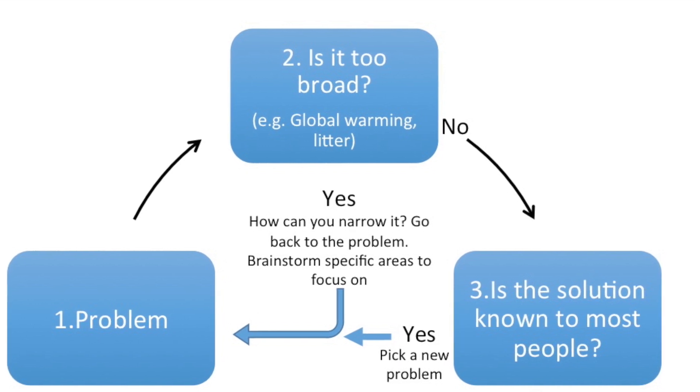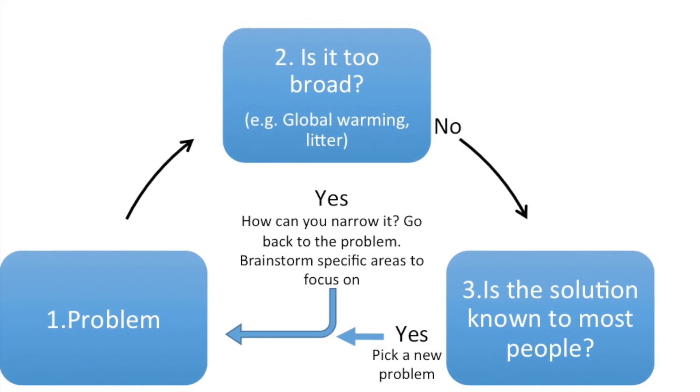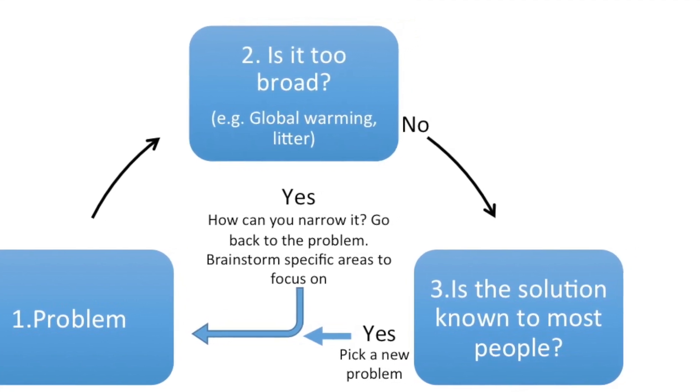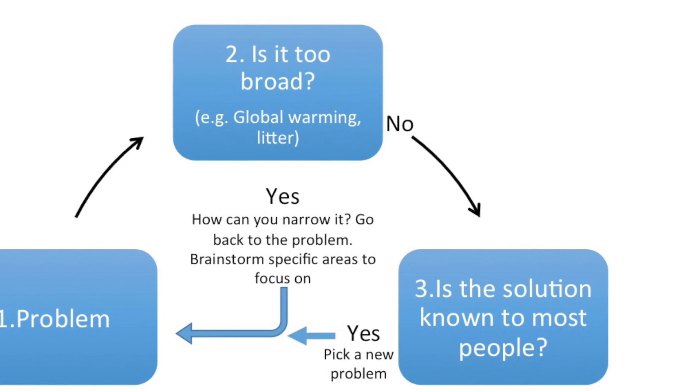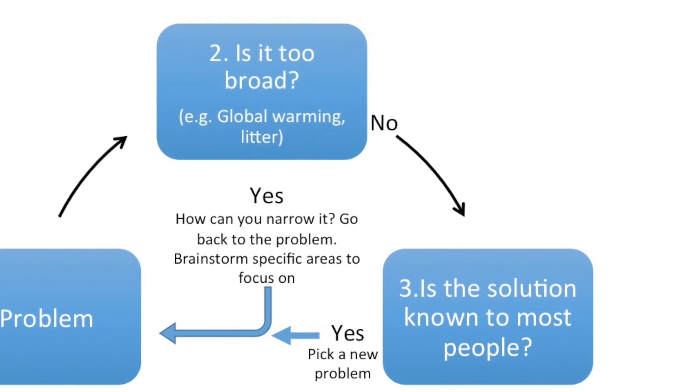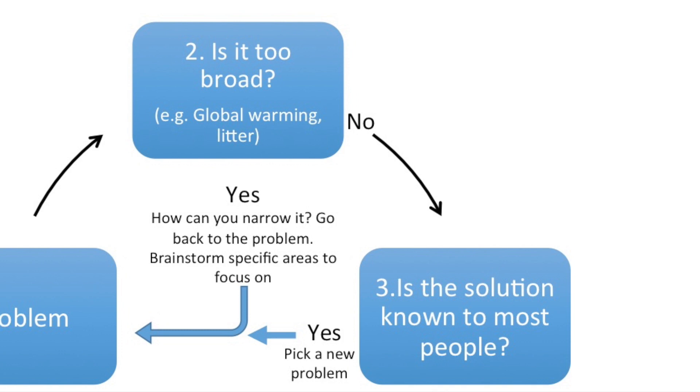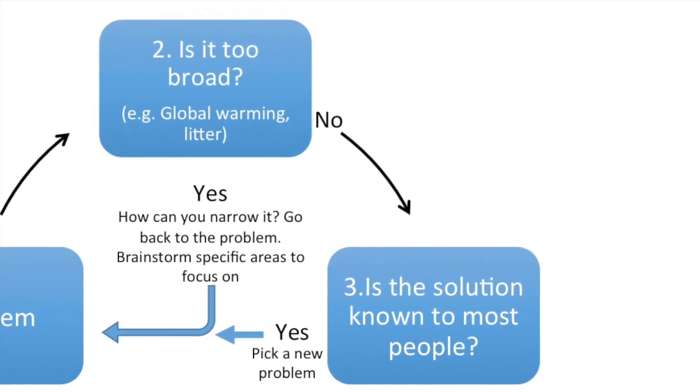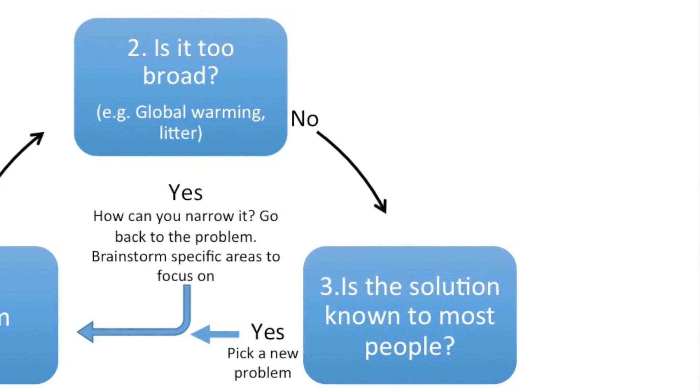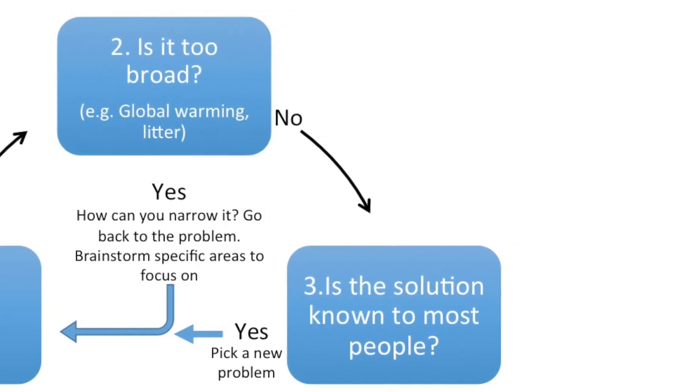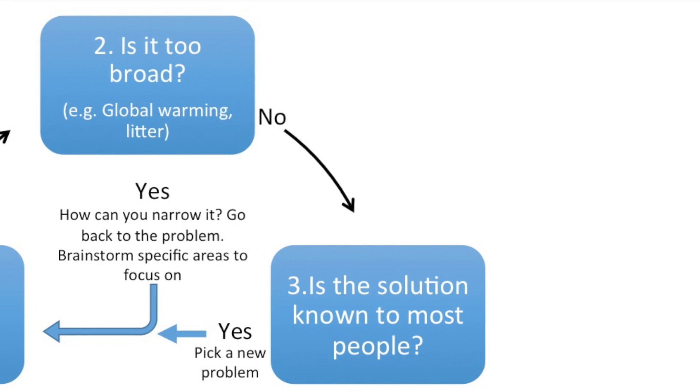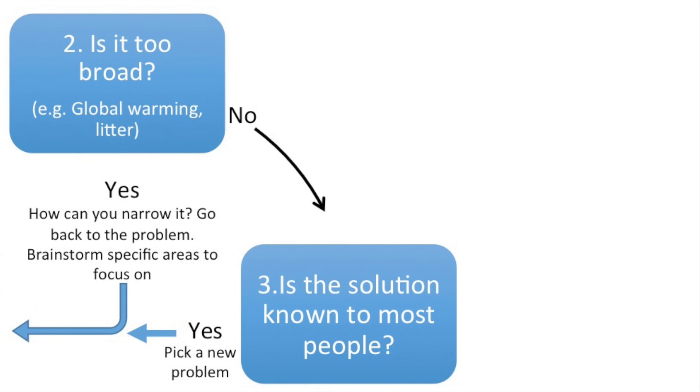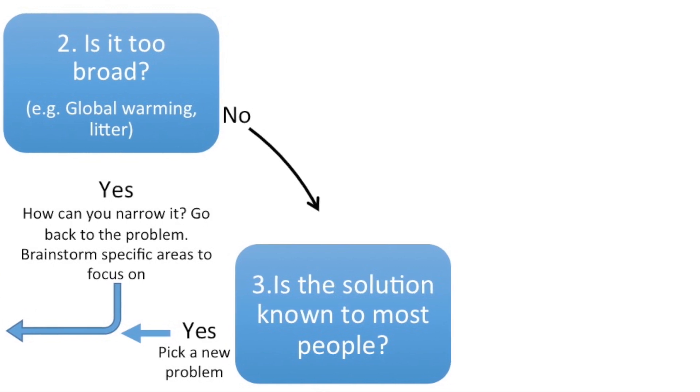The third step is to ask if the solution is already known to people, is it common knowledge? For example, if your area of interest is smoking and you've narrowed down your problem to smoking in teenagers, and you think that one of your solutions is to educate teenagers on the harmful effects of smoking, you have to ask yourself, is this solution known already? If the answer is yes, then you have to pick a new problem or a more original solution.